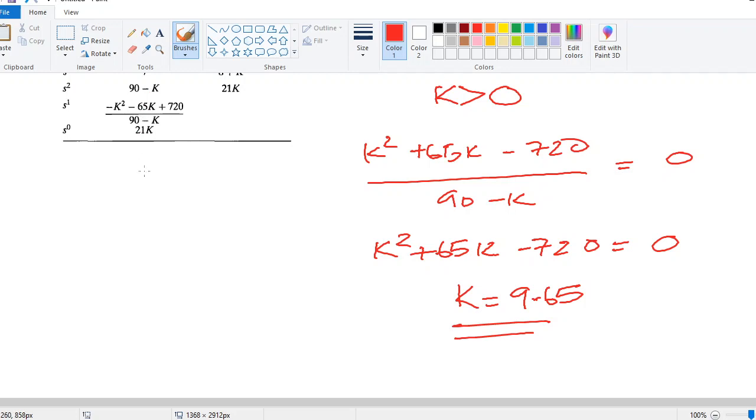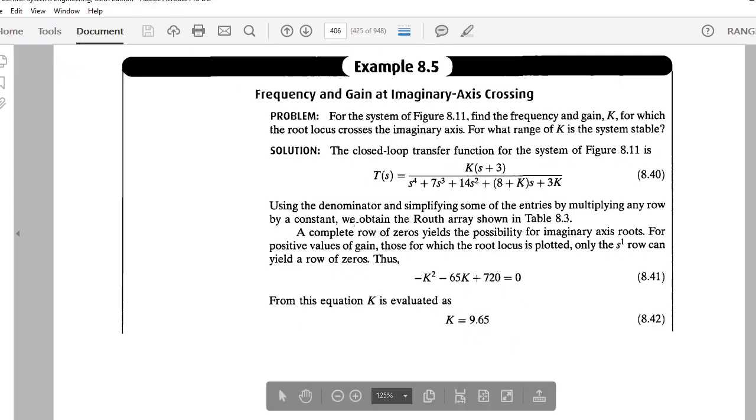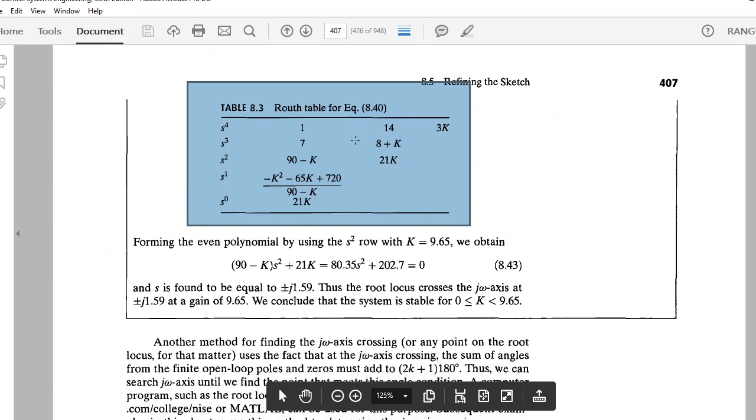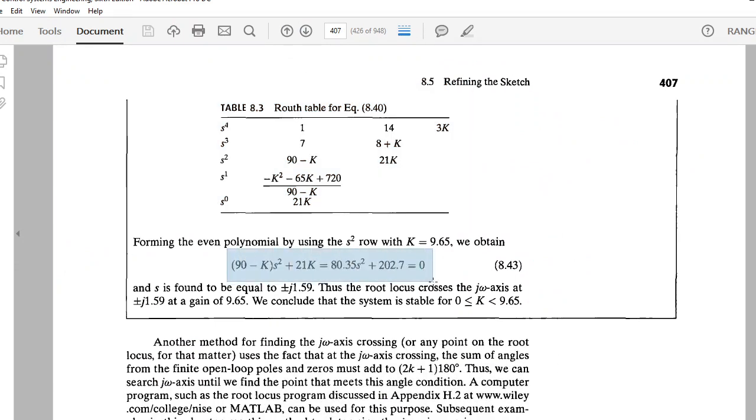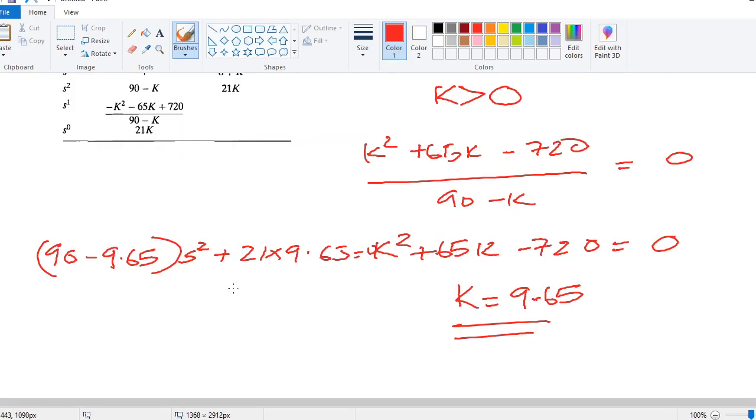You will get it as 90 minus 9.65 s squared plus 21 into 9.65 equals zero. You will get this as 90 minus 9.65, so if you do the mathematics there...